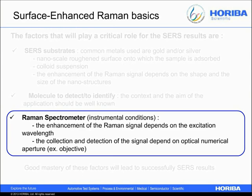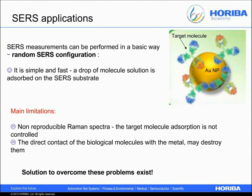From a practical point of view, the SERS measurements can be performed in a basic way. The experimental configuration is called the random SERS configuration. This configuration allows simple and fast detection of the target molecule: a drop of the molecule solution is absorbed on the SERS substrate, as shown in the figure on the right part of the slide. However, using this configuration it is possible to run into some limitations. One of them is SERS non-reproducibility, because we cannot control the molecule adsorption — more precisely, the molecule orientation. Thus, the SERS signals collected can be different. Moreover, it has been shown that the structure of biological molecules can be destroyed quickly by simple deposition on the metallic surface.